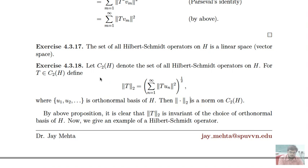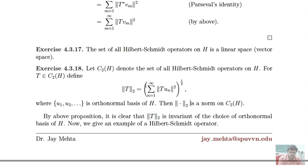Once we verify these properties, C₂(H) becomes a normed linear space. In the next lecture we will see the condition for an infinite matrix to be Hilbert-Schmidt — how to determine whether T is Hilbert-Schmidt in terms of its matrix representation. Please let me know if you have any doubts, and thank you.